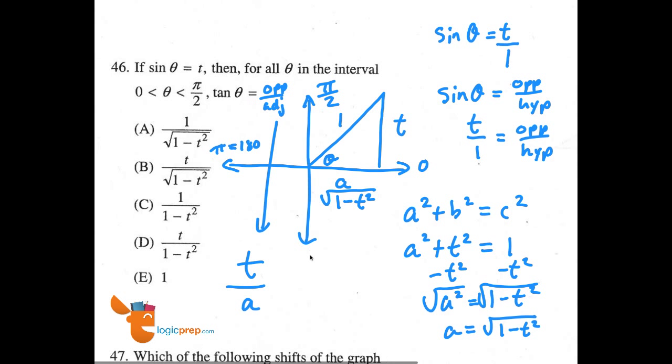They want the tangent of theta, as we said it was t opposite over A adjacent. So here it's going to be t over the square root of 1 minus t squared, which makes answer choice B the correct answer here.